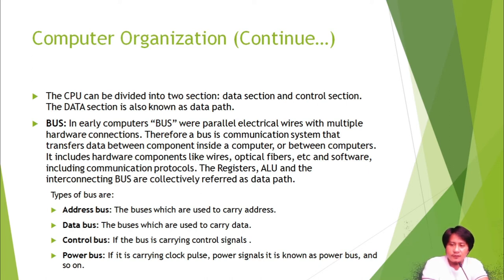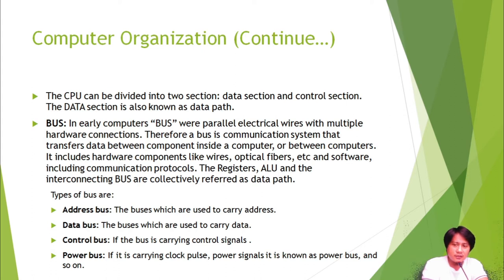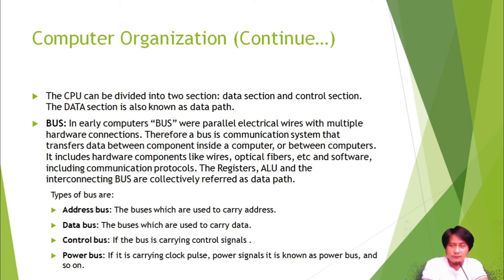The registers, ALU, and interconnecting bus are collectively referred to as the data path, because these are the organizations that hold the data from input through processing to output. The bus has at least four types.